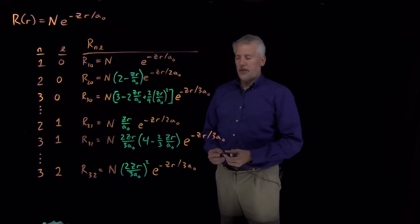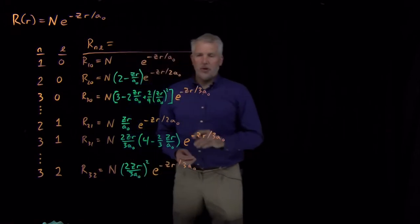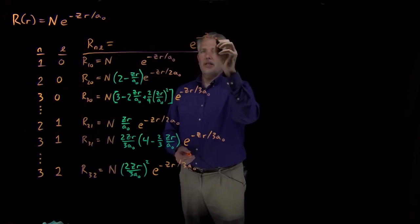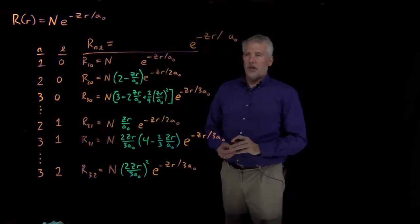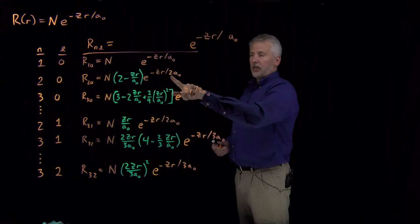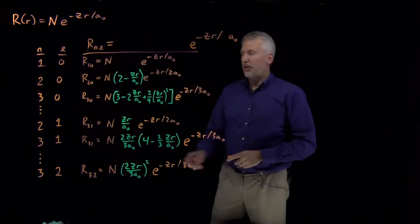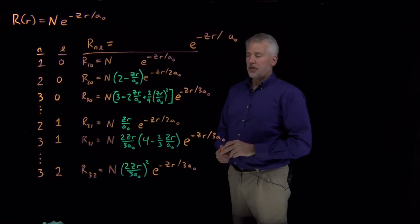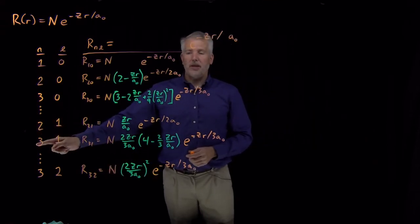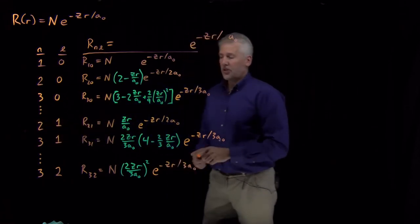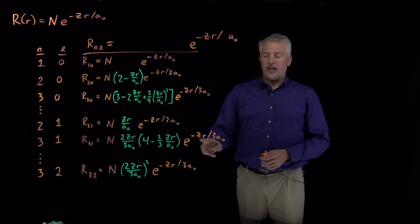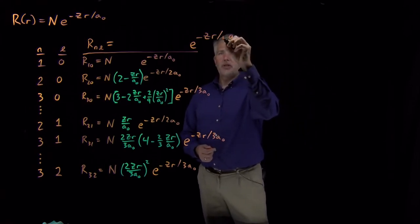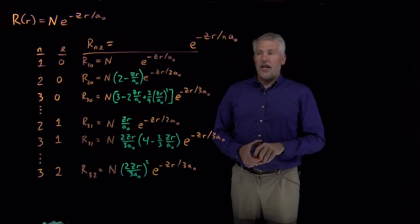Every radial solution always has e to the minus z times r divided by the Bohr radius — but sometimes divided by one a₀, or two a₀, or three a₀. That's the reason we label them N equals one, two, three: N tells us how many Bohr radii we divide by in the exponential. So for L equals one solutions, the first has e to the minus Zr over two a₀ and the next has e to the minus Zr over three a₀, giving us the N equals two and N equals three solutions. The exponential always has e to the minus Zr over N times a₀.